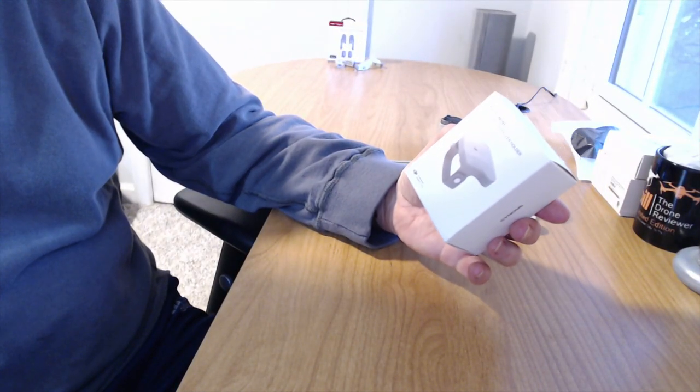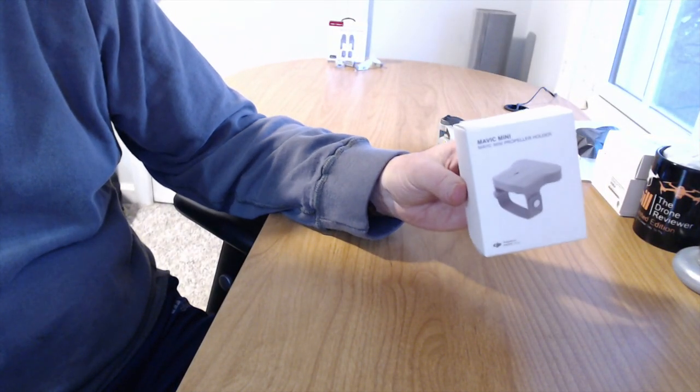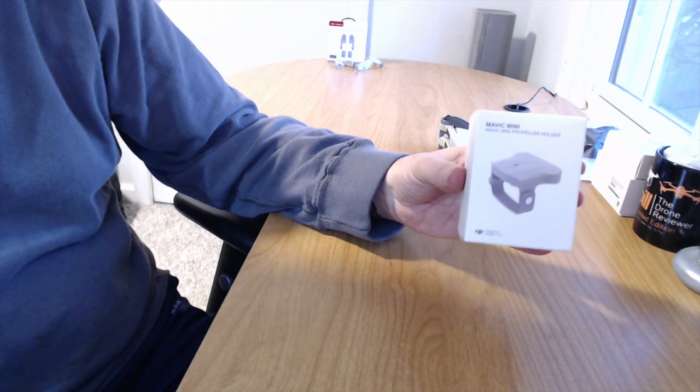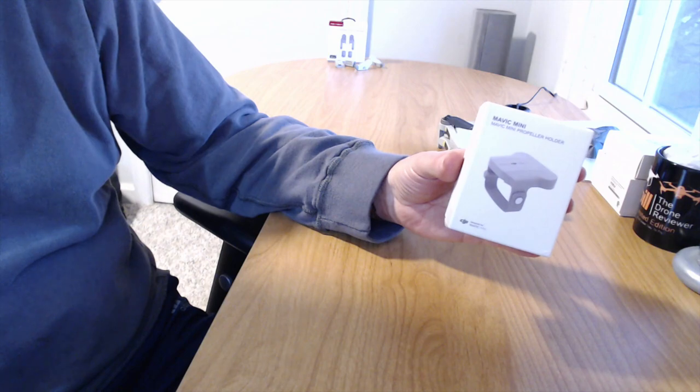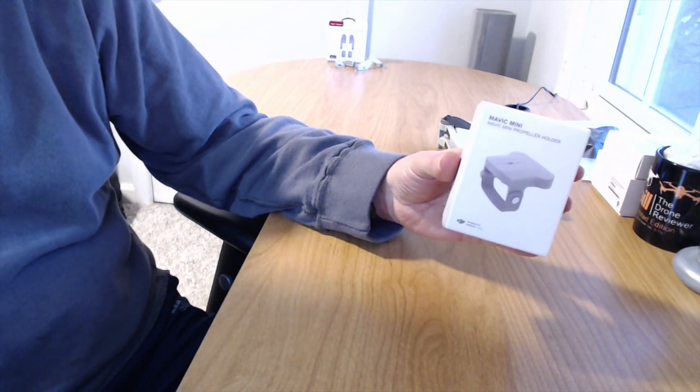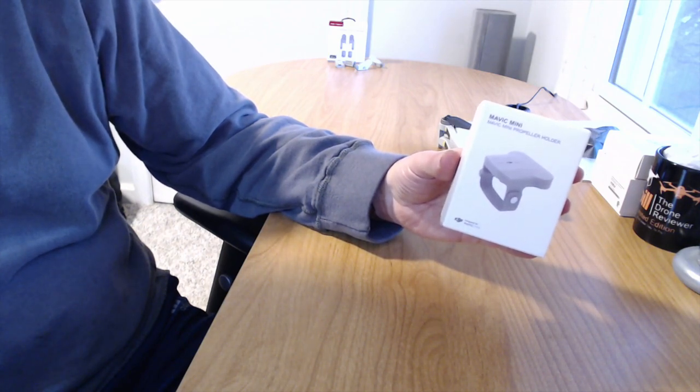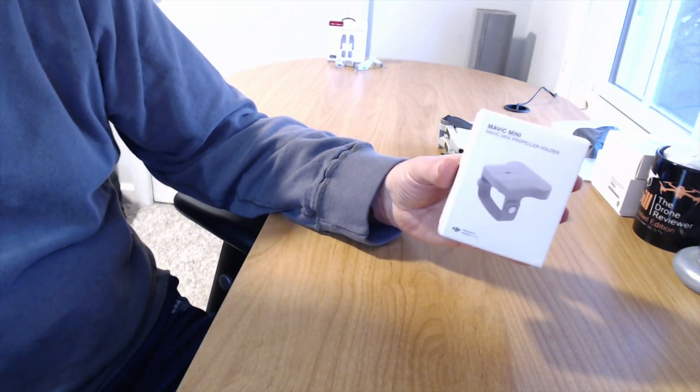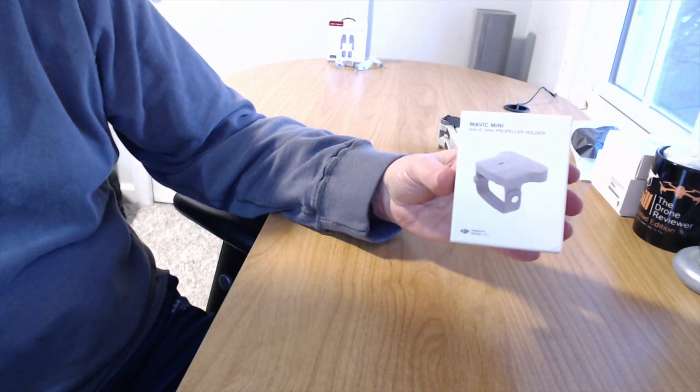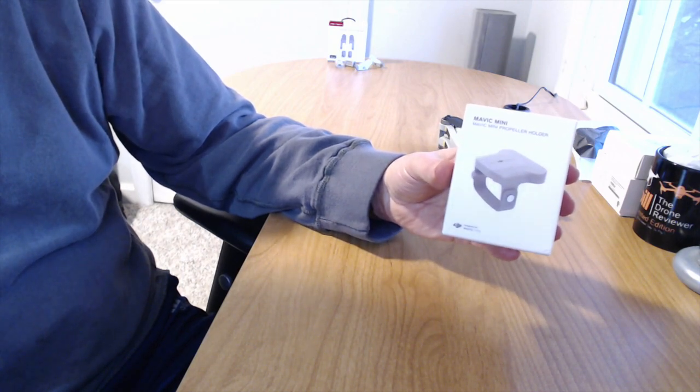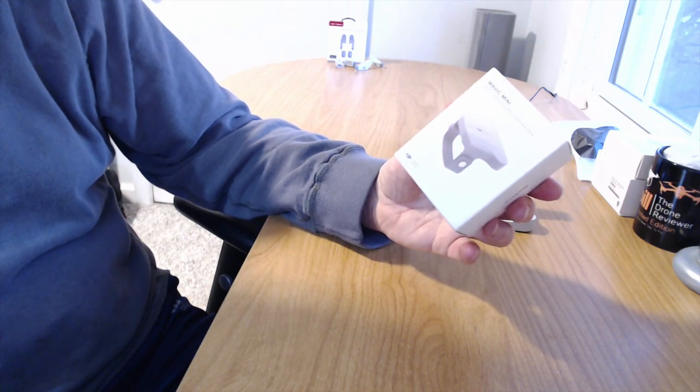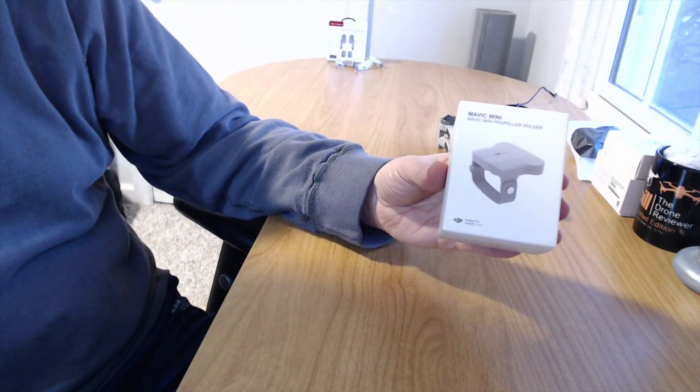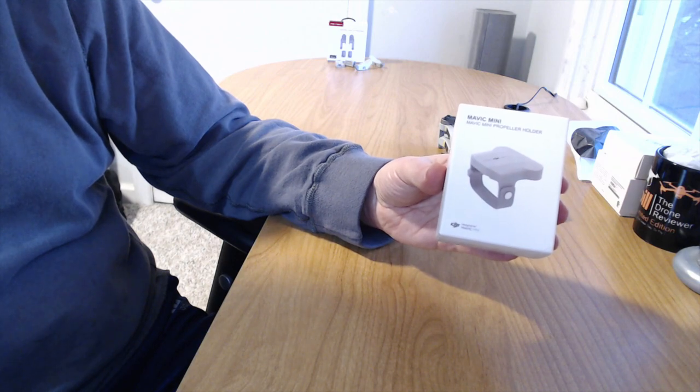The Mavic Mini propeller holder is made by DJI. You can order from either DJI's website or from Amazon. I don't have the price at my fingertips, but I will put it in the description with links to whether you want to buy it from Amazon or directly from DJI. I don't remember the price, but it's very affordable. So let's get into it and show, let's do a demo of how the product works.